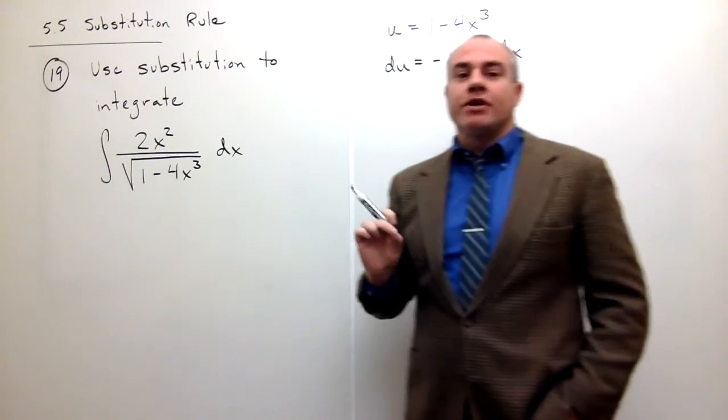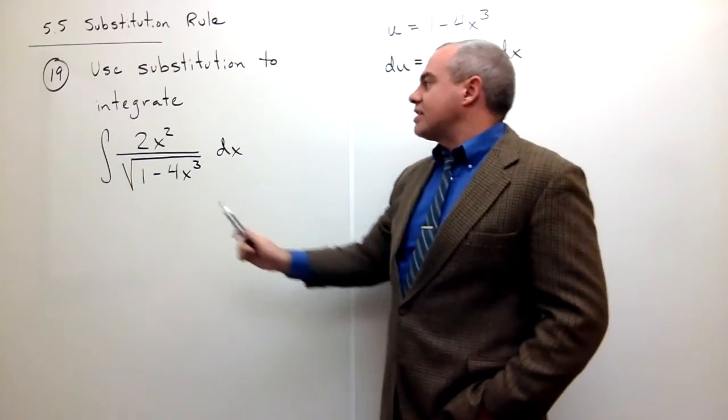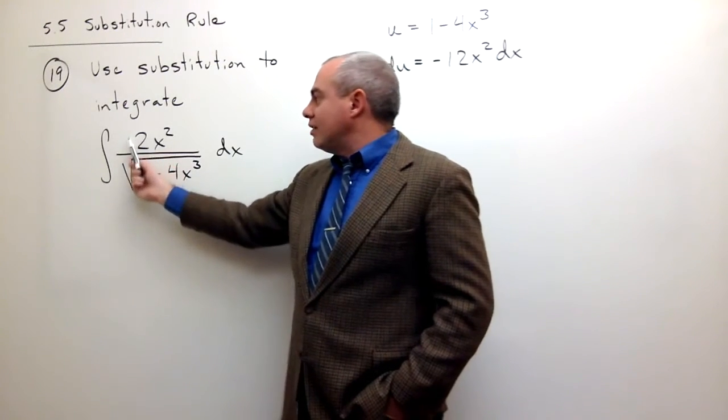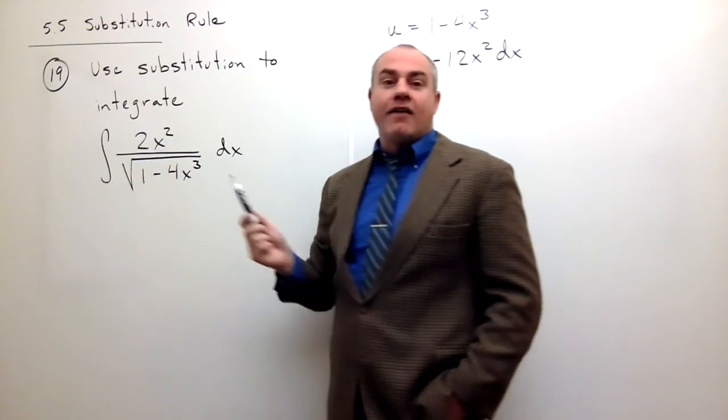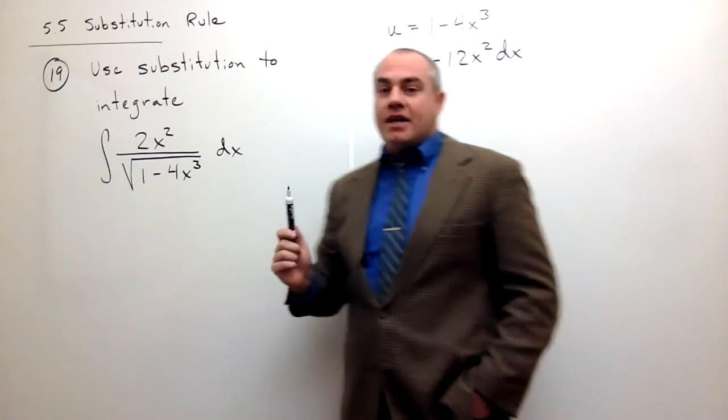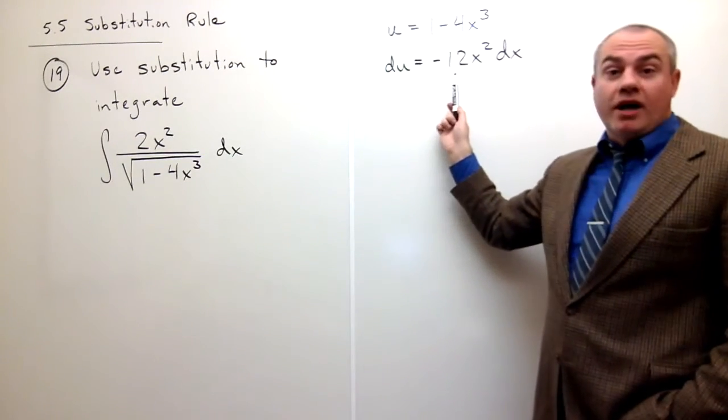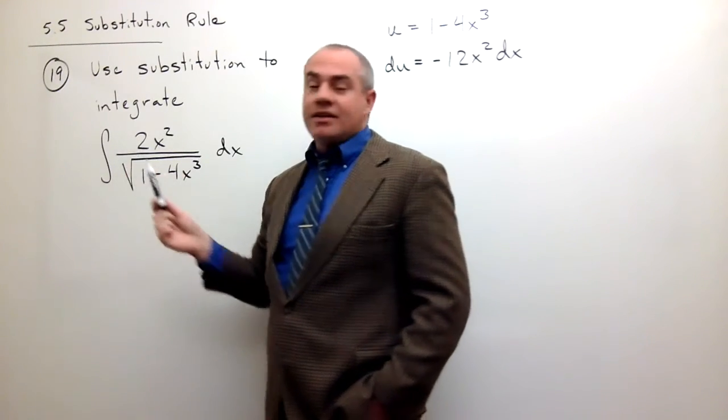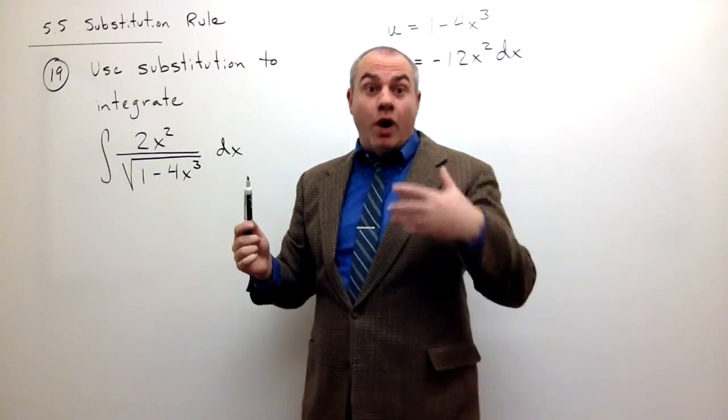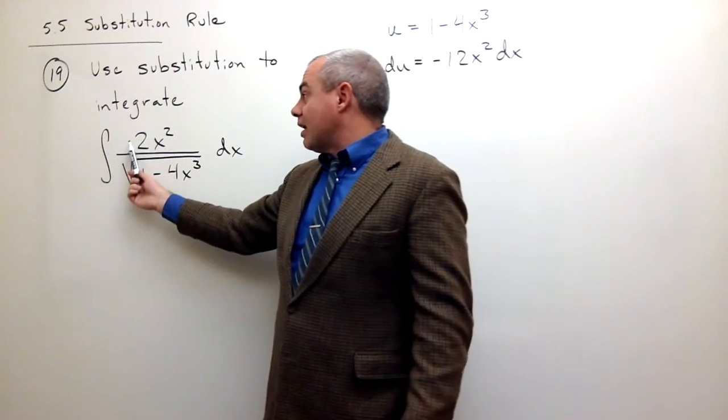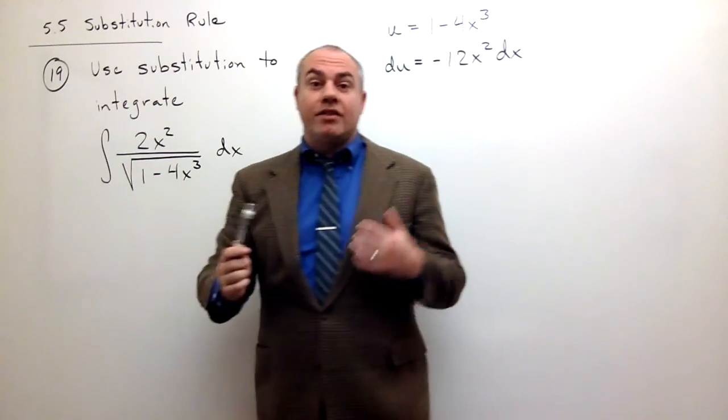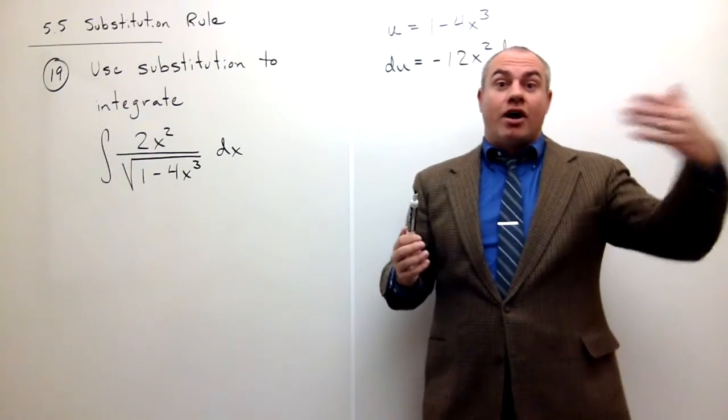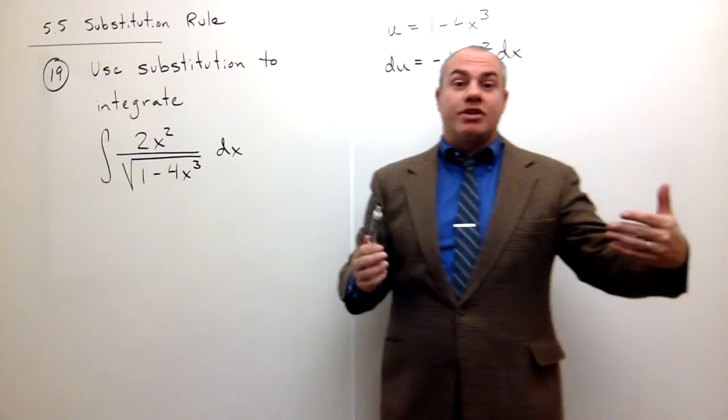So what I'm going to do is I'm going to be a little bit tricky. I'm going to say, okay, what do I need right here in order to have what I want? I need that to be a minus 12. So why don't we just multiply this by what we need to multiply by to make this a minus 12, and then we'll deal with that multiplication on the outside of the integral. So let me show you what I mean.